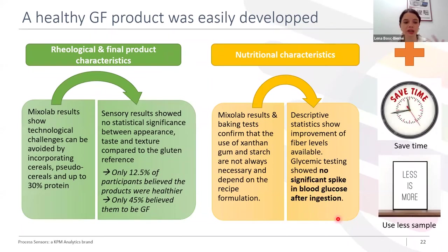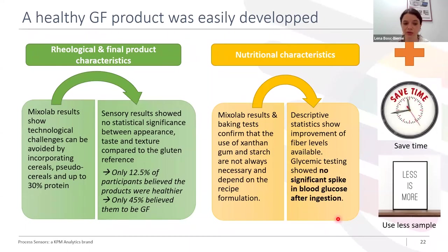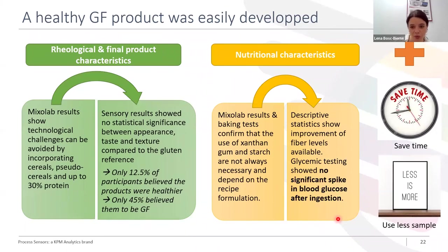Using the MixoLab allowed saving a lot of time by considerably reducing the amount of baking tests. The entire first phase was done without making any baking tests, which also allowed the PhD student to use less sample — very important because hemp protein remains very expensive right now.